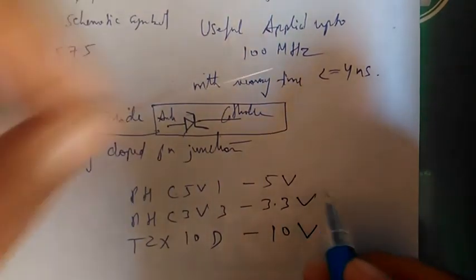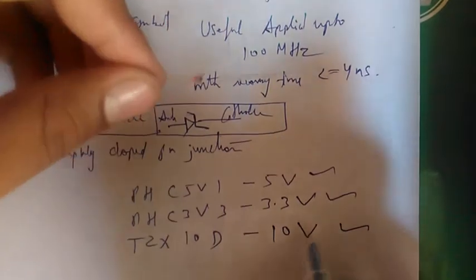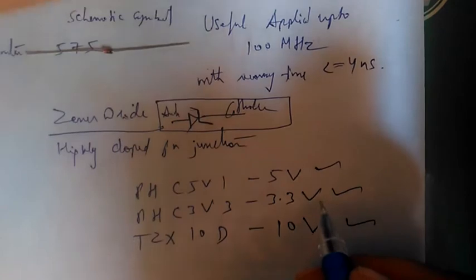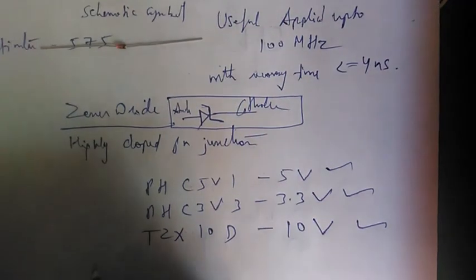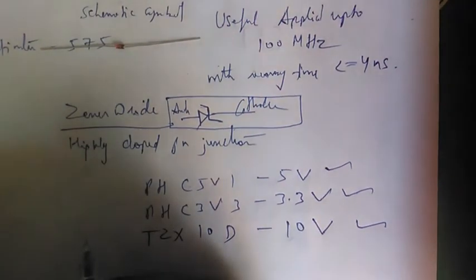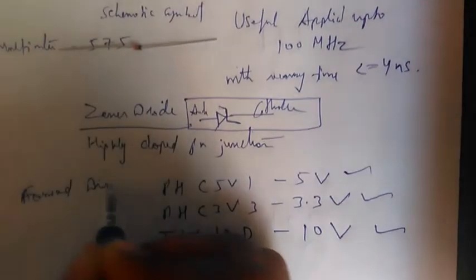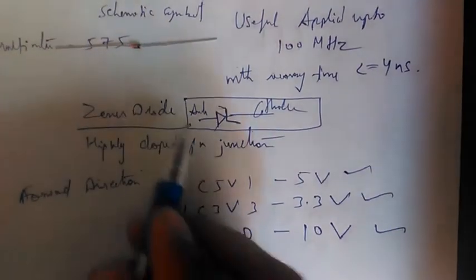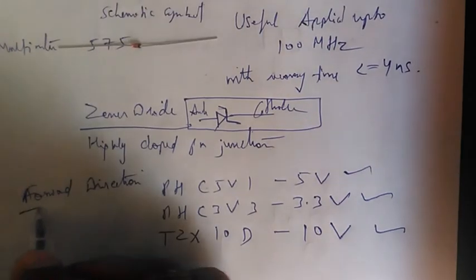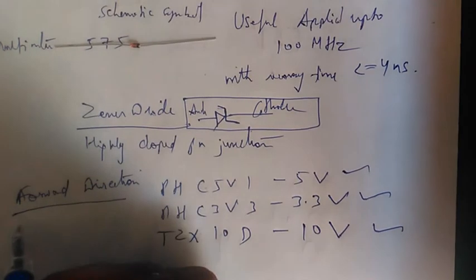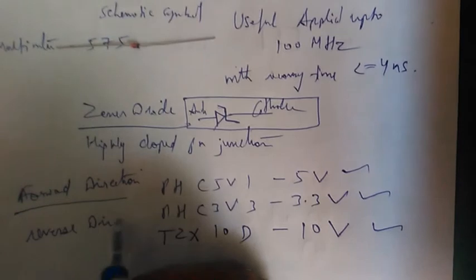This is the breakdown voltage that the Zener diode shows. The Zener diode allows current in the forward direction, same as a regular diode — it is a passive device. But it also permits current to flow in the reverse direction once the breakdown voltage is reached.